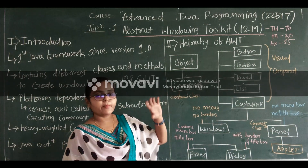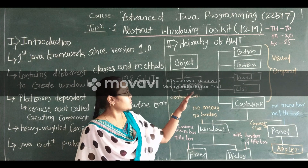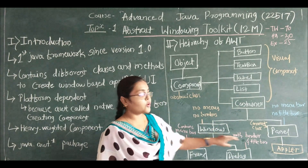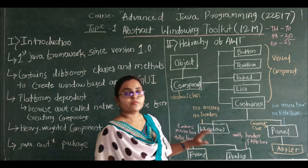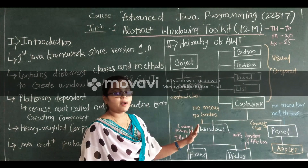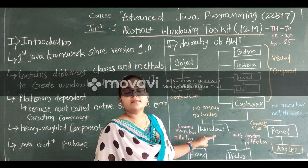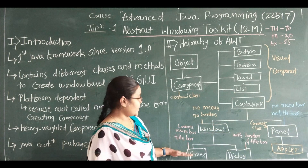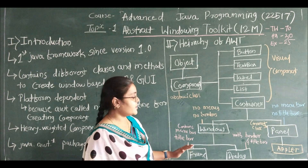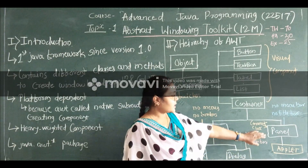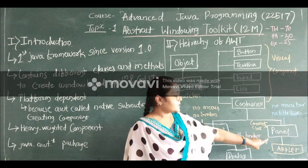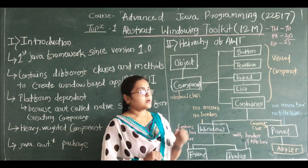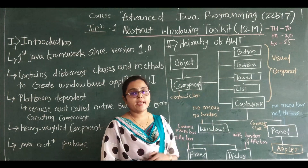The hierarchy of AWT: the main class is Component and it has the Container subclass. Container has Window and Panel subclasses. Window has Frame and Dialog. Window does not contain menu bars or borders, and we cannot create an object of Window directly — we should use the subclass Frame, Dialog, or Panel. Frame contains menu bar and title bar. Dialog contains border and title bar. Panel is the concrete class which has the subclass Applet. This is the brief introduction and information about the hierarchy of AWT.